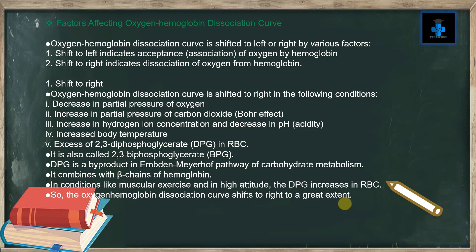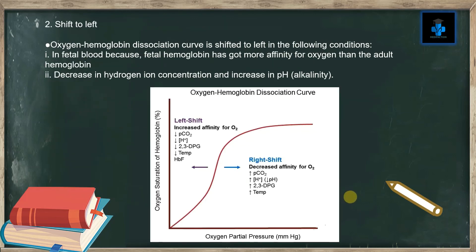Due to these factors, the oxygen-hemoglobin dissociation curve shifts to the right to a great extent. The curve shifts to the left in the following conditions: number one, in fetal blood — fetal hemoglobin has more affinity for oxygen than adult hemoglobin; number two, decrease in hydrogen ion concentration and increase in pH leading to alkalinity.